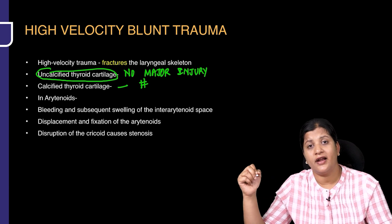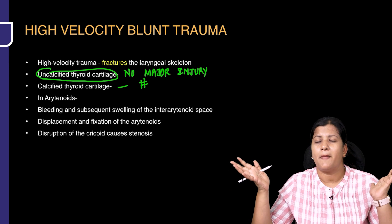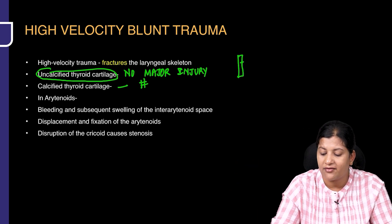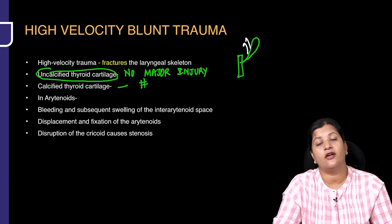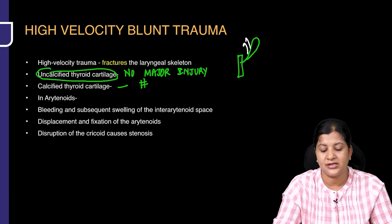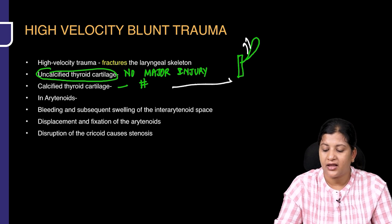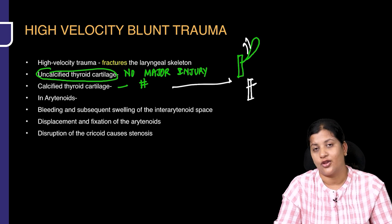In an uncalcified thyroid cartilage, it will usually recoil back. The maximum consequence is that the epiglottis, which is attached to the thyroid cartilage, can sometimes get dislocated from it. That could be the only possible consequence with an uncalcified thyroid cartilage. But with a calcified thyroid cartilage, you can see fracture at the level of the ala of the thyroid cartilage.